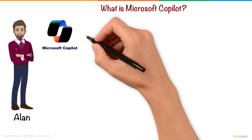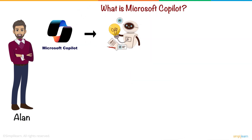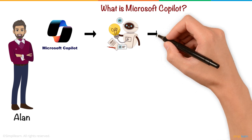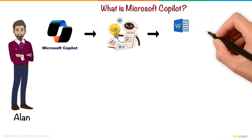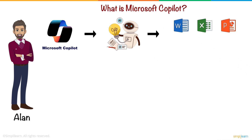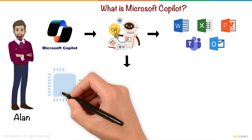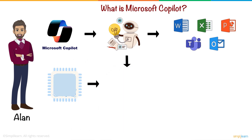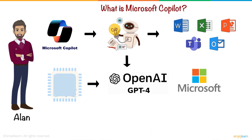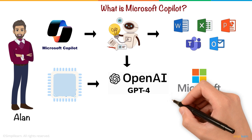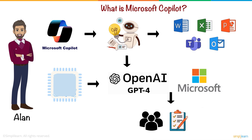Microsoft Copilot is an AI-powered assistant integrated into Microsoft 365 applications like Word, Excel, PowerPoint, Outlook, and Teams. It leverages advanced artificial intelligence, particularly OpenAI GPT-4 and Microsoft proprietary models, to assist users in various tasks, making work more efficient and less time-consuming.